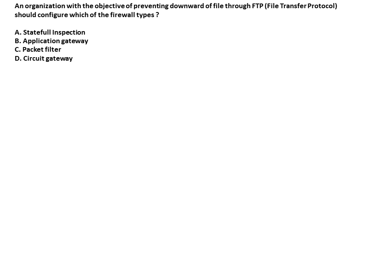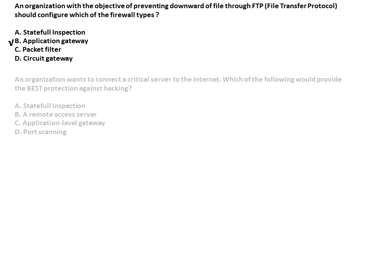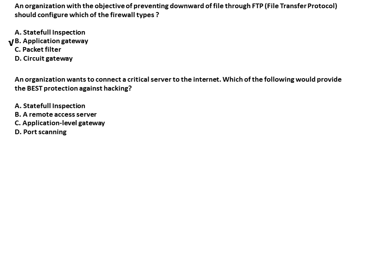With the objective of preventing download of files through FTP — as discussed, application level firewall controls applications such as FTP and HTTPS, so the answer in such a scenario should be application gateway. An organization wants to connect a critical server to the internet — which would provide the best protection against hacking? In any given scenario, application level gateway provides the best protection because it works at the highest level of the OSI model.